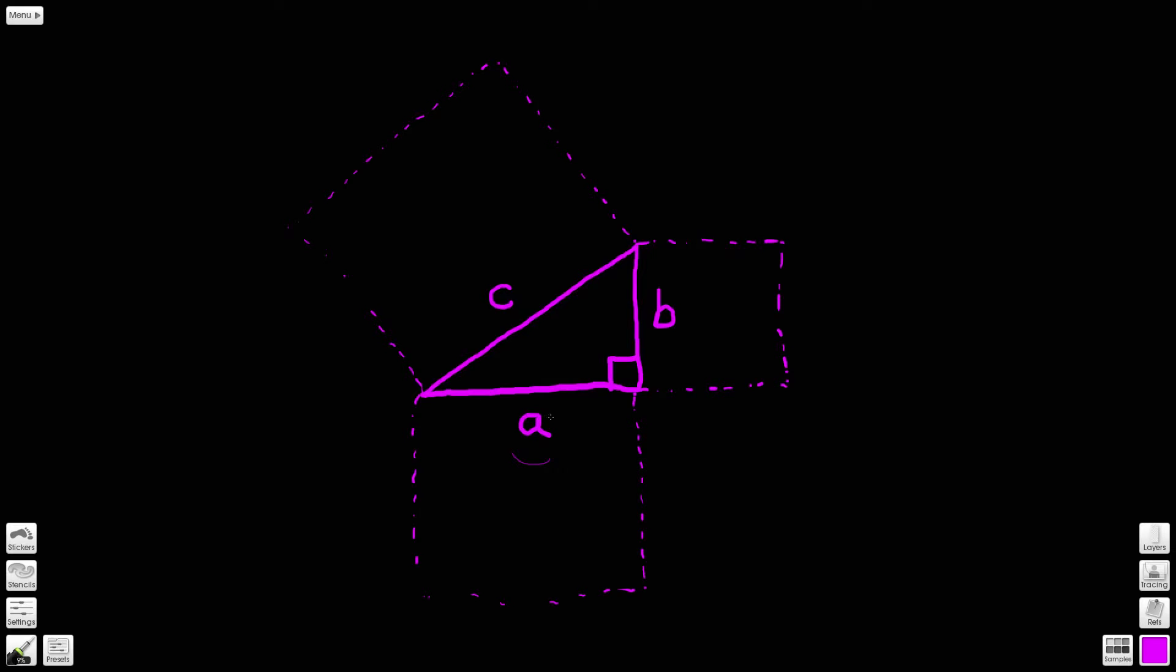So what we've got is we've taken side a and we've effectively squared it - we've multiplied it by itself. So we've taken side a and we've multiplied it by this length here, a, so we've ended up with a times a. The area of this square is equal to a squared.